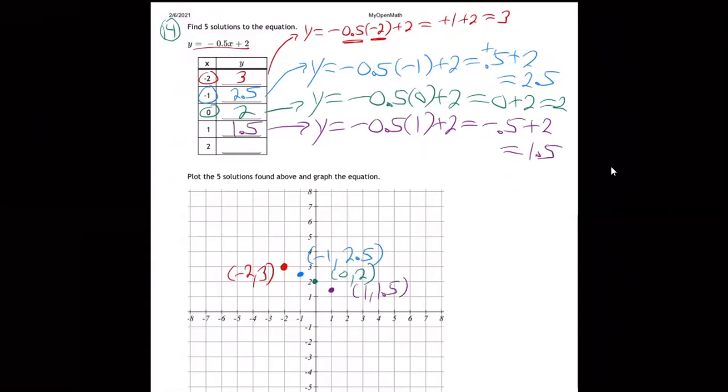And last one: plug in 2. Plus 2, you get negative 1. Half of 2 is 1, plus 2 is positive 1. So over 2, up 1. No surprise, they all line up, don't they? So that one's over 2, up 1. There they are, all lined up.